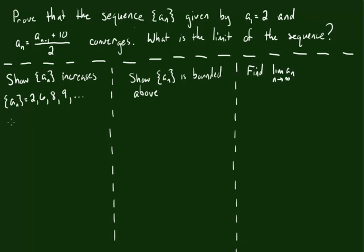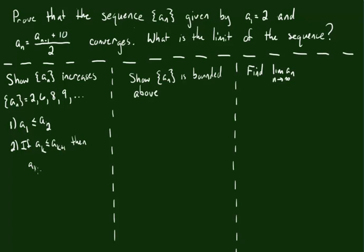So we have to prove two things. One, we have to prove that a_1 is less than or equal to a_2. That's the first part of our process. And the second part, we want to prove that if a_k happens to be less than or equal to a_{k+1}, then we know that a_{k+1} is going to be less than or equal to a_{k+2}.